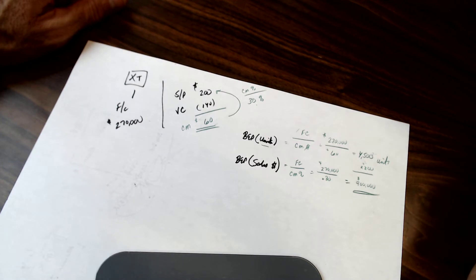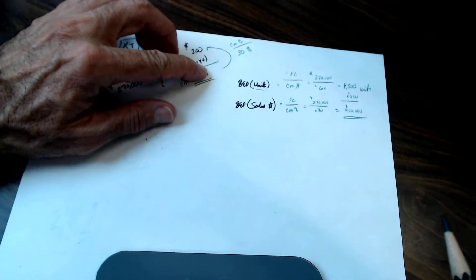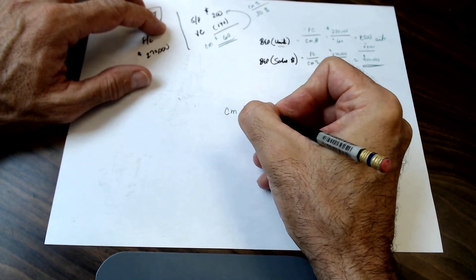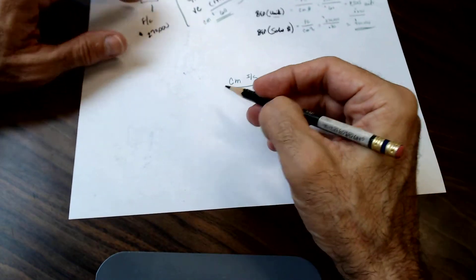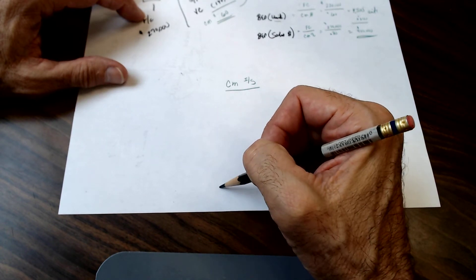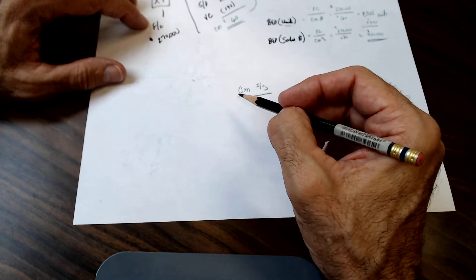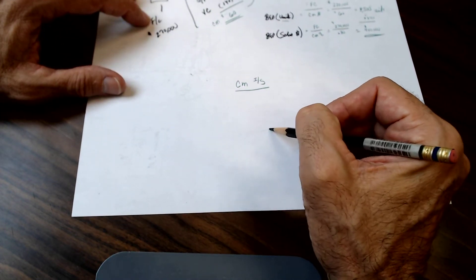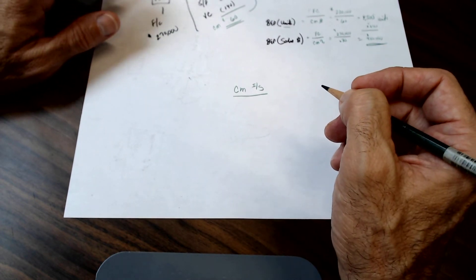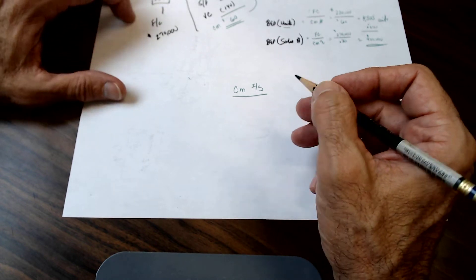Now they want us to compute a contribution margin income statement. The contribution margin income statement is just a different way of showing the income statement — revenues, costs, and net income. It just proves that this is the break-even point. The subtotal in the middle is not gross profit like on a regular GAAP-based income statement; this is the contribution margin format.